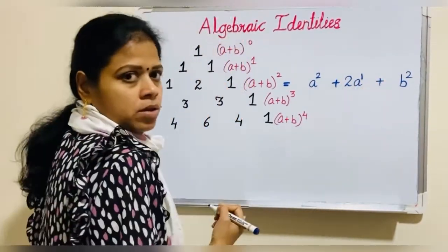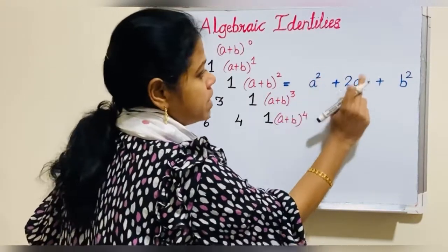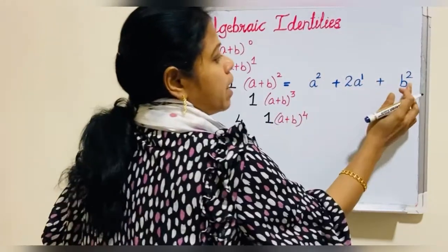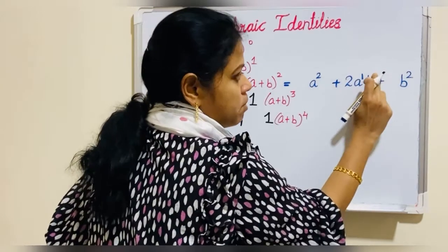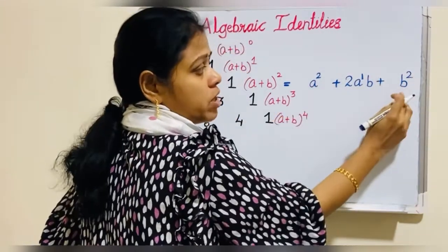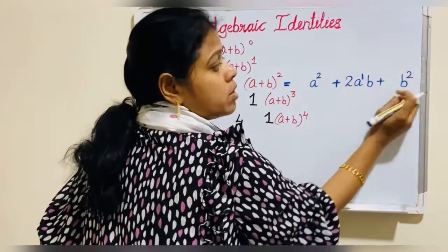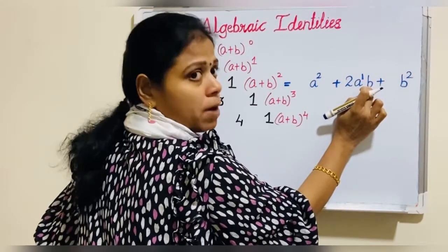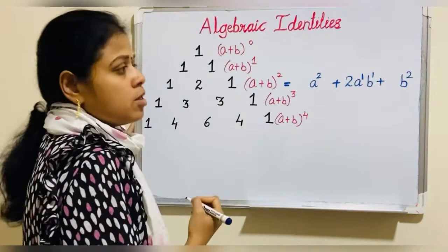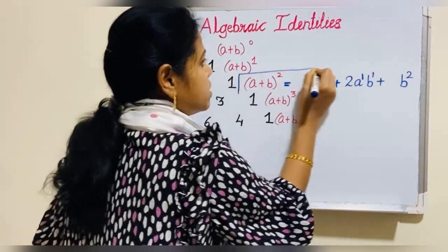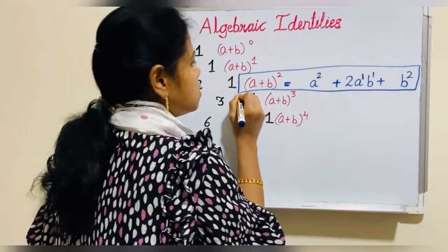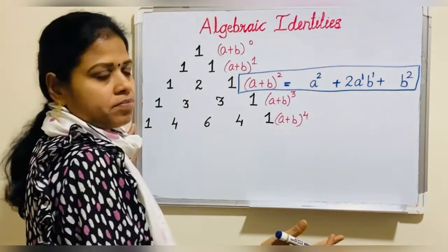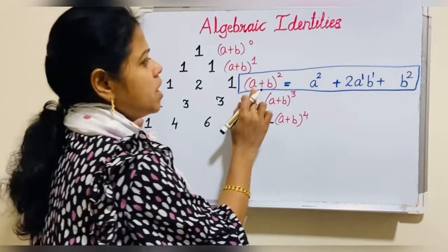The previous term is a², so the next term will be a^(2−1) = a¹. For b, you take the b power from the right side, because the variable b always starts from the right side. So from the right, b's power is 2, meaning here it will be 2 minus 1, which is 1. So now we have got the expansion: (a+b)² = a² + 2ab + b².